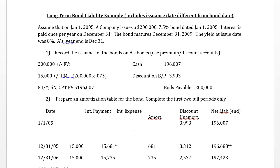Hi folks. Welcome to this video on long-term bond liabilities. In this example, we're going to do a review in the first part of the video: how to calculate the present value of a bond, record the bond and associated interest, and also accrue interest at an intervening year end — when a year end occurs between interest payment dates. In the second part, we'll focus on a situation when the bond date is different from the issue date and how we count the proceeds from the investor to the issuer.